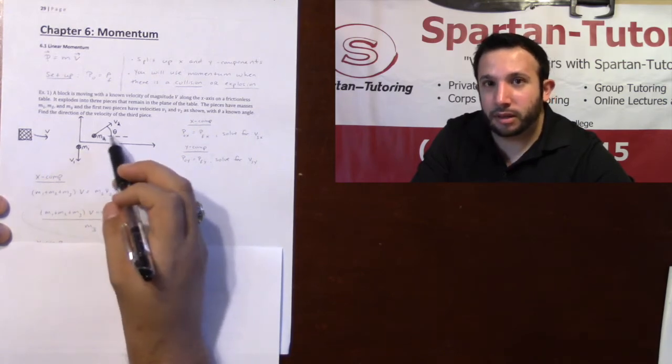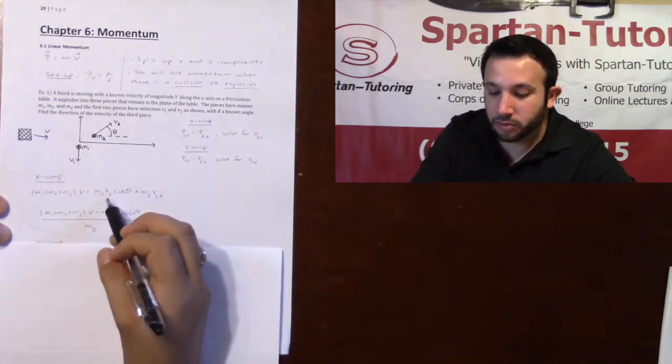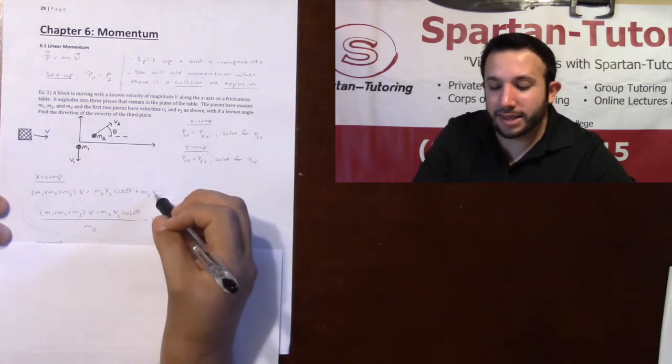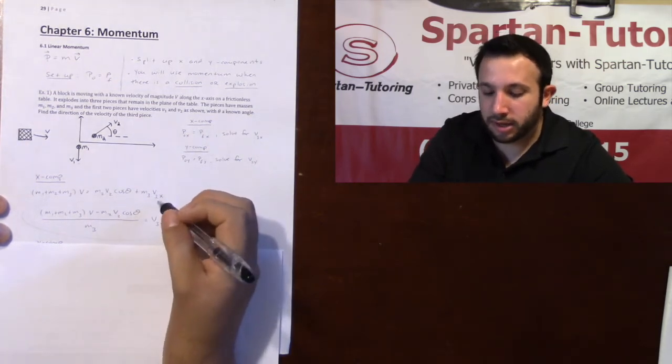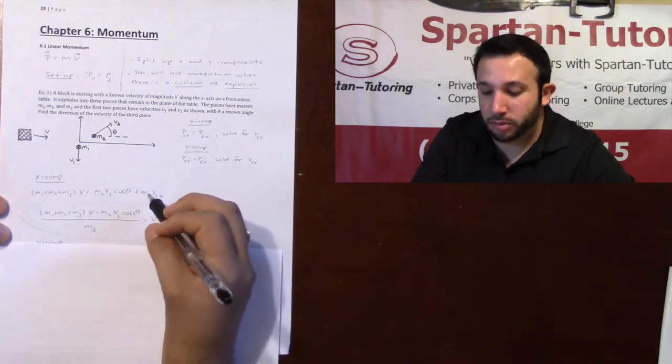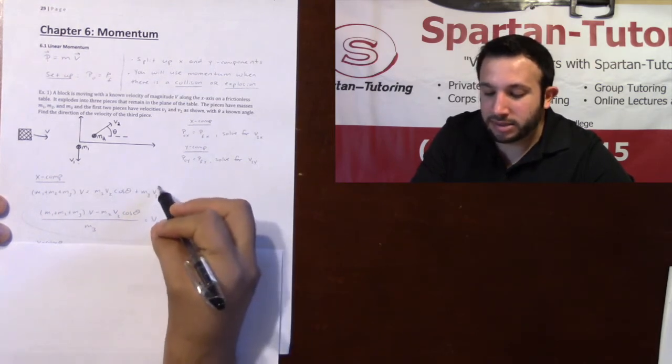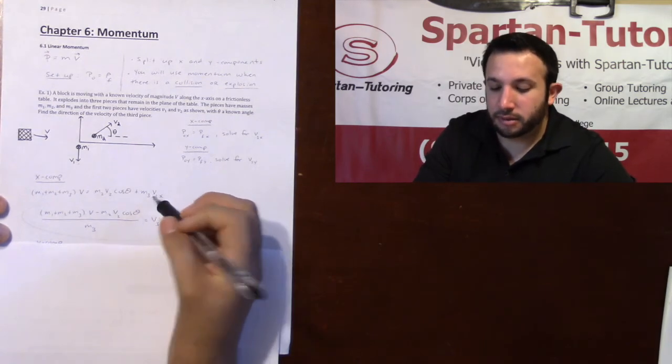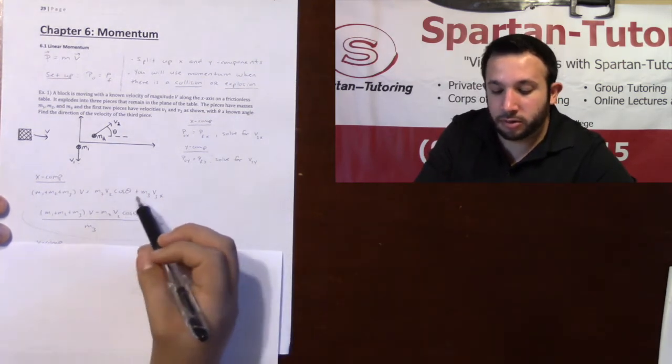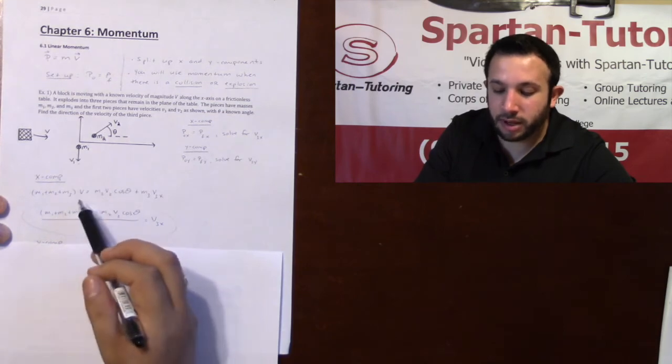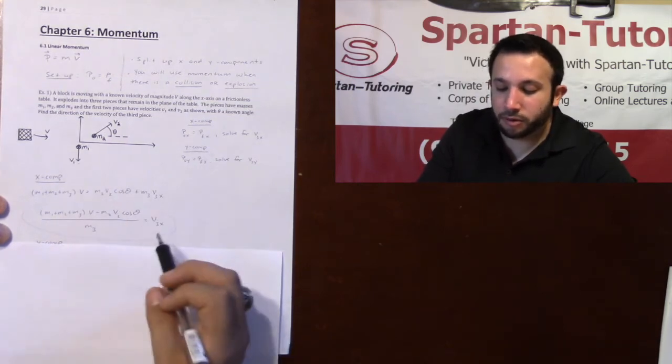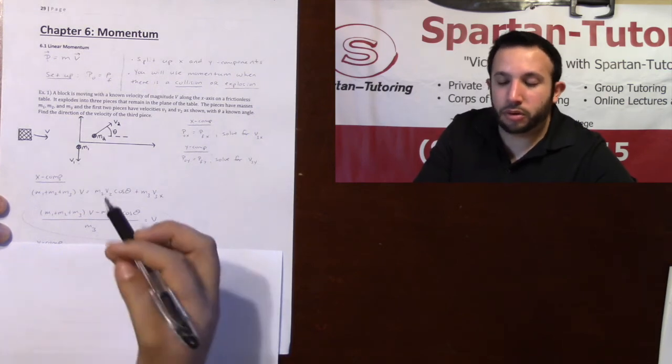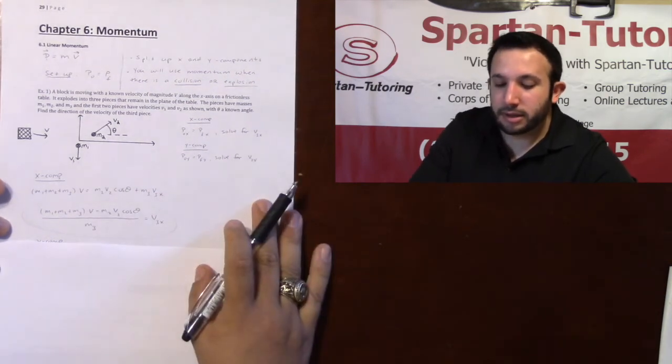But m2 does. M2's x component of the momentum is going to be m2 times the x component of its velocity, which will be v2 cosine theta. Now m3 has an unknown direction, so I'm going to say m3 times v3x. I don't know what v3x is but I'm about to, by doing a little bit of algebra. So I just subtract that over, divide by m3, and this is the x component of your third piece.